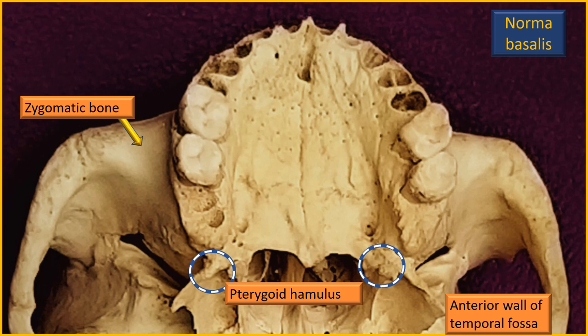There are two dotted circles where a part of the sphenoid bone can be seen in close vicinity to the posterior edge of the palatine bone. On the right side, the pterygoid hamulus of this bone can be seen. On the left side, the pyramidal process of the palatine bone can be seen in the encircled area.